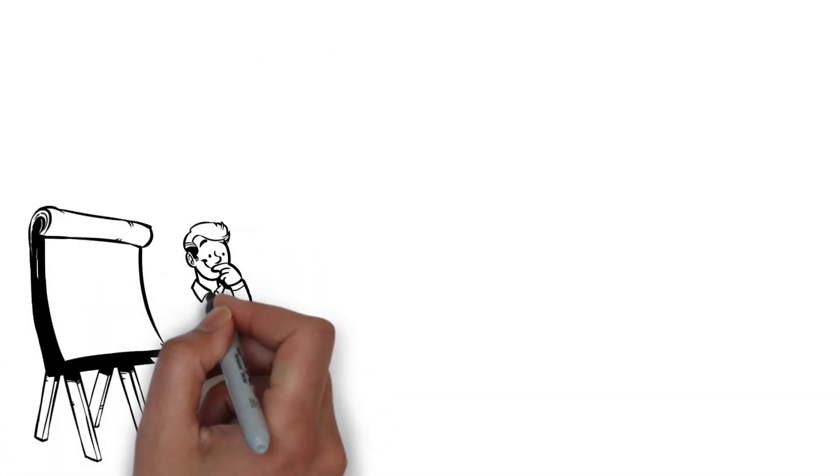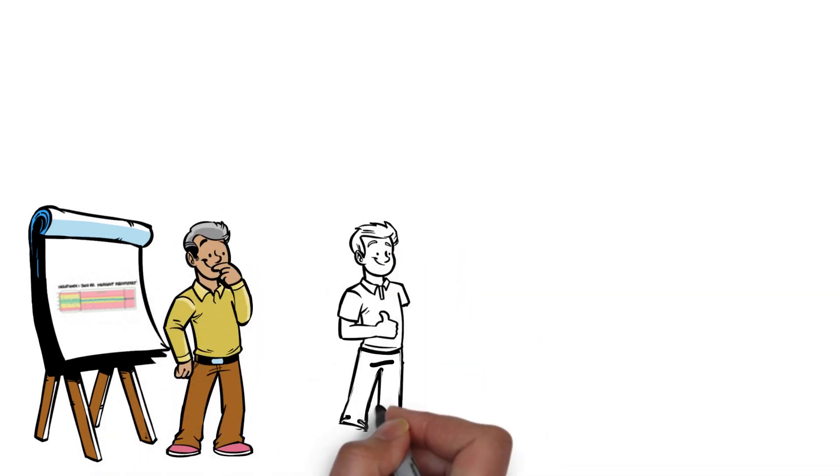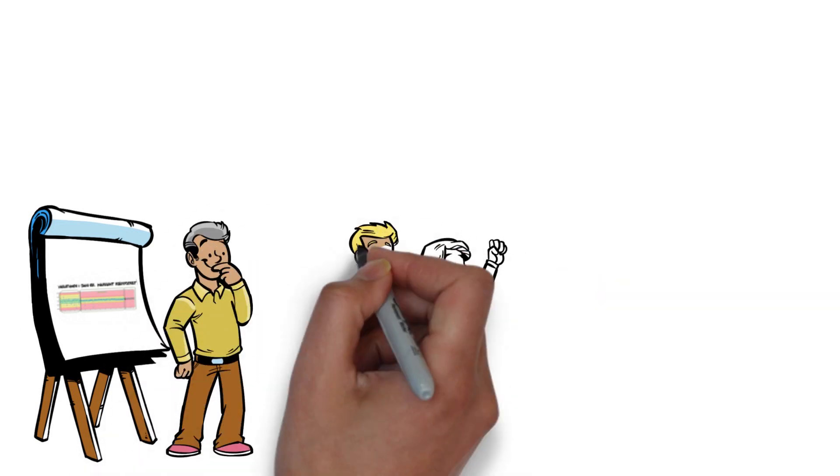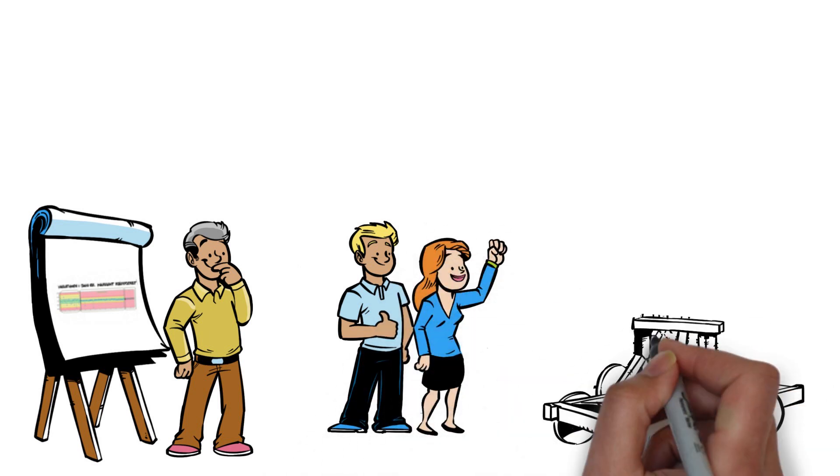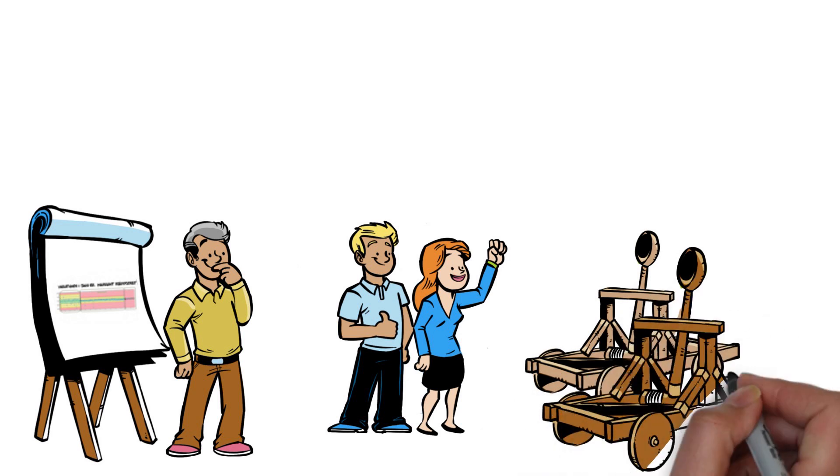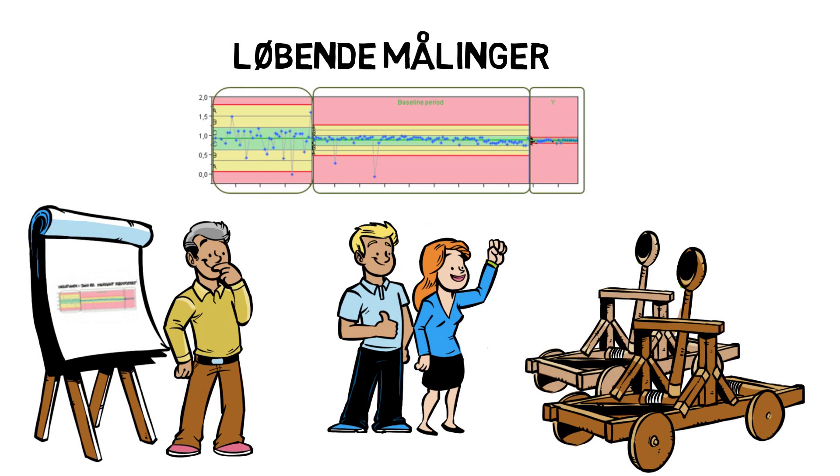Now we are at the very last phase in DMAIC, the control phase. We need to prove that the problem has been solved, and we need to standardize our improvements and solutions, Mr. Storm said. He and the employees agreed to measure selected but critical areas in the process to ensure the improvements were persistent.